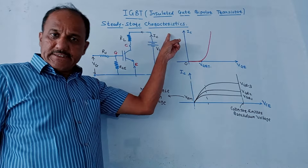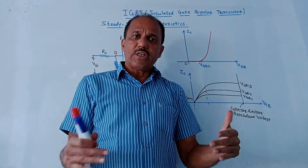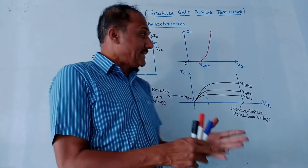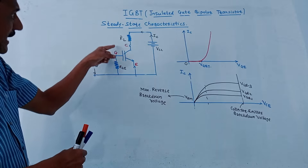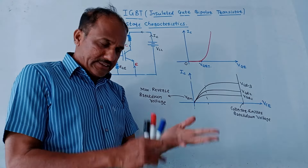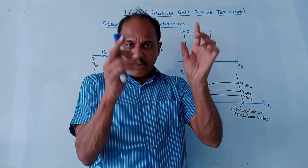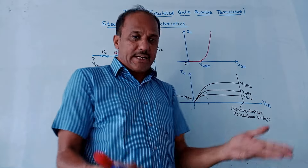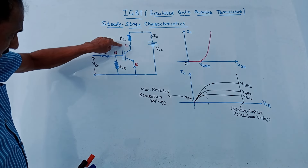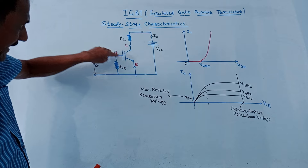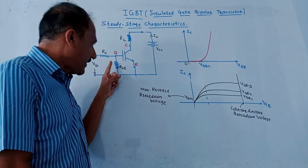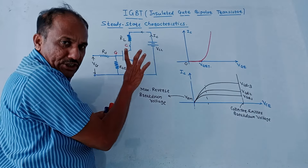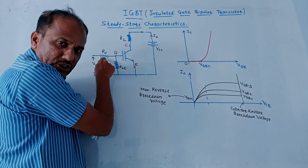Next is the steady-state characteristics. This is very similar to steady-state characteristics of earlier power devices we have studied, with slight differences. The circuit diagram used to obtain steady-state characteristics has collector, gate, and emitter terminals. VG is the gate voltage, VCC is the collector voltage, RL is the load resistance, RS is the internal resistance of the source, and RGE is the resistance connected between gate and emitter.